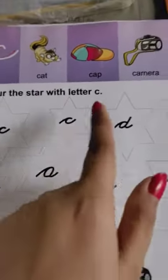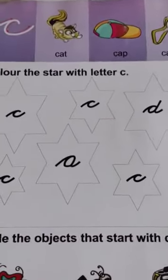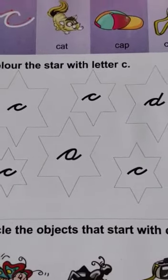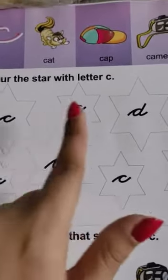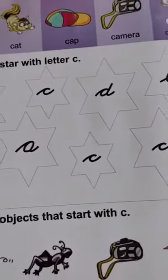There are many letters here. You have to ask your child, where is the letter C? They have to recognize it. They have to recognize the letter C, and when they find the letter C, they have to color the star. Only that one star. Okay?